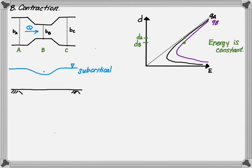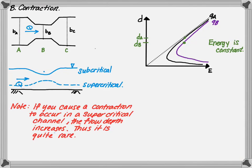This shows that the flow is subcritical, and the depth will decrease through the contraction, moving from point A to point B. Remember that the flow rate is constant, but the unit discharge increased through the contraction, which results in a decrease in depth. On the other hand, for a supercritical channel, the flow depth will increase through the contraction. This is quite rare, and usually you will not see a contraction in a supercritical channel.